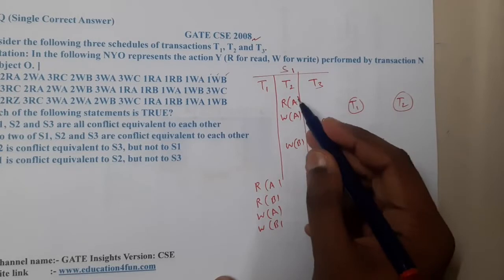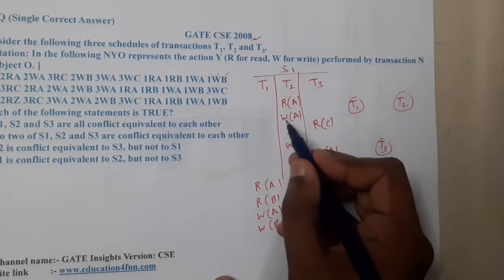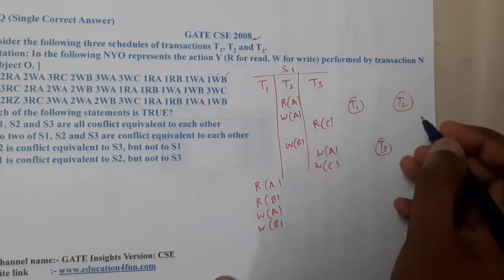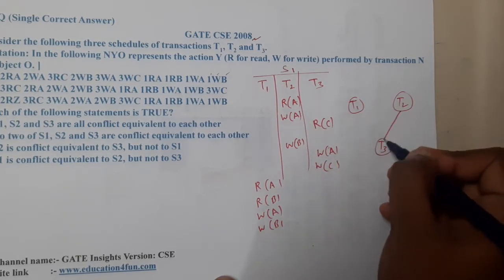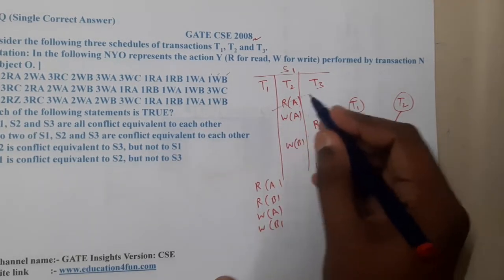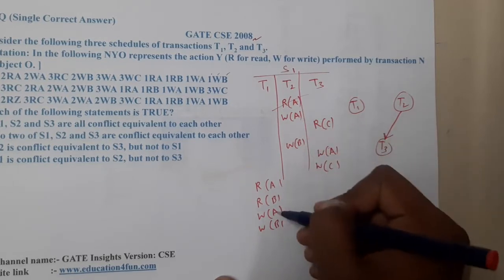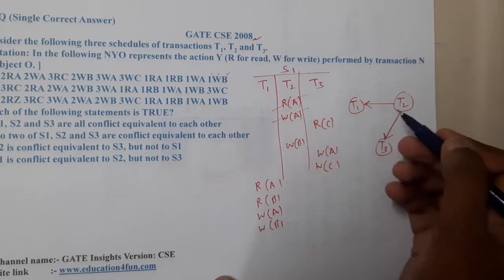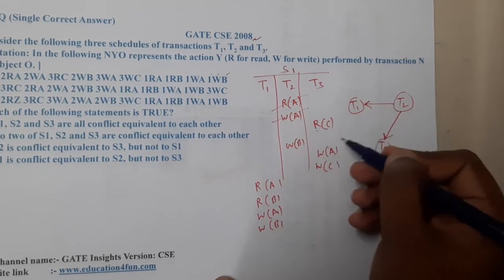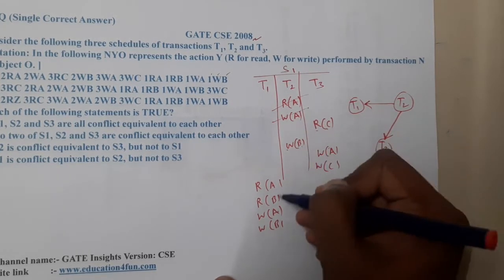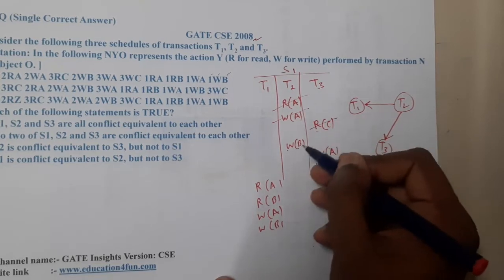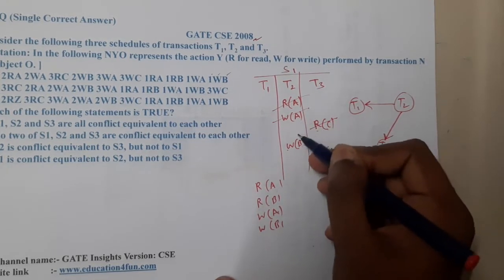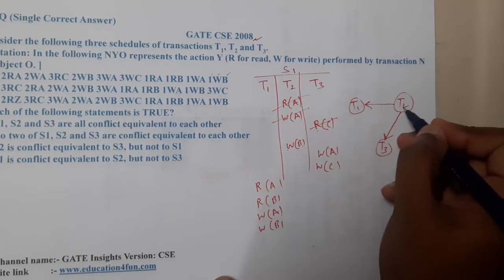When it comes to T2, T2 is executing first with a read operation, and here we are having a write operation. So T2 and T3 have a dependency — there is an edge from T2 to T3. Similarly, T2 is also having an issue with T1, so there is an edge T2 to T1 as well. Moving on to Read C — there is no C elsewhere, so this statement is done. Write B — B is available in T1, so there is an edge T2 to T1, which is already listed.